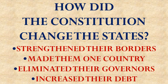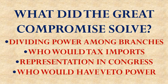Next question: how did the Constitution change the states? Did it strengthen their borders, make them all one country, eliminate their governors, or increase their debt? The correct answer is that it made them all one country — a dramatic change. What did the Great Compromise solve? It solved the problem of representation in Congress, with the solution being a House based on population and a Senate where every state was represented equally.